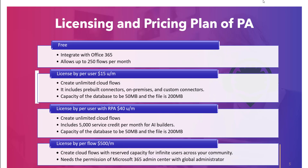Next, licensed by power user with attended RPA, which costs $40 per user per month. Here it allows creating unlimited cloud flows and includes 5,000 service credits per month per AI Builder. The database capacity is 550 MB and the file capacity is 200 MB. With this plan, you can get RPA and AI services, and the user can also automate legacy applications.